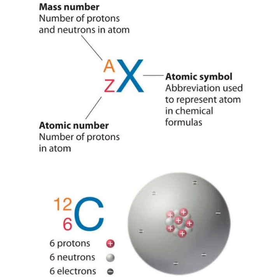In today's lecture we will take a review of the definitions: atomic number, mass number, and atomic symbol. The atomic number is the number of protons in the nucleus of an atom. The mass number is the sum of the number of protons and neutrons present in the nucleus of an atom.